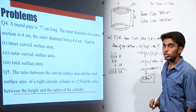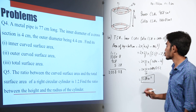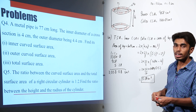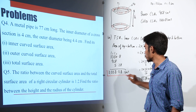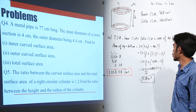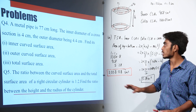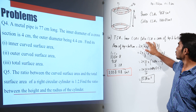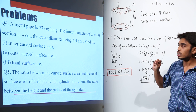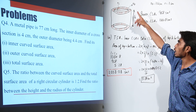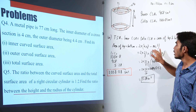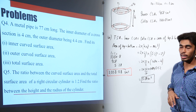This gives us 2038.08 cm². This is the total surface area of the metal pipe — the sum of the inner cylinder, the outer cylinder, and the top and bottom surfaces. The key point here was that the area of the top and bottom is calculated as the area of the outer circle minus the area of the inner circle: π·r0² minus π·ri².